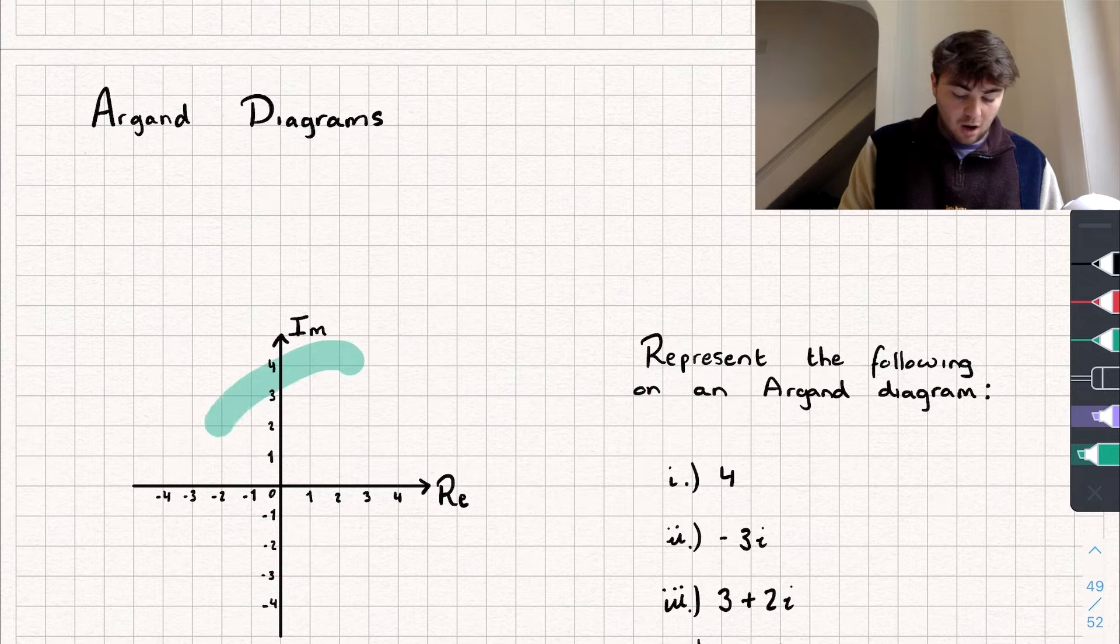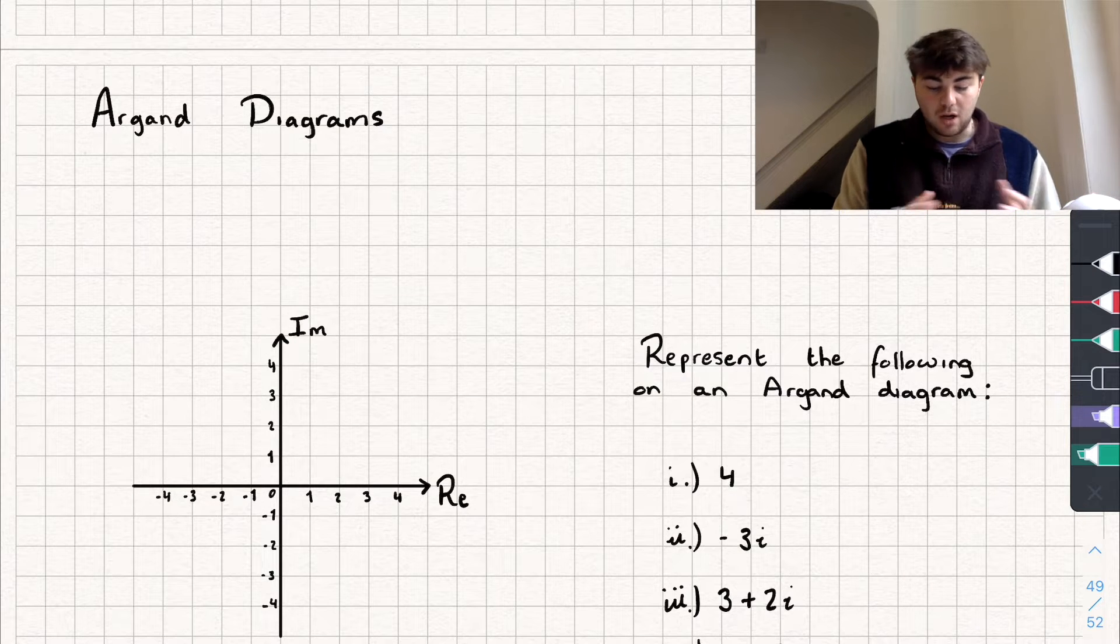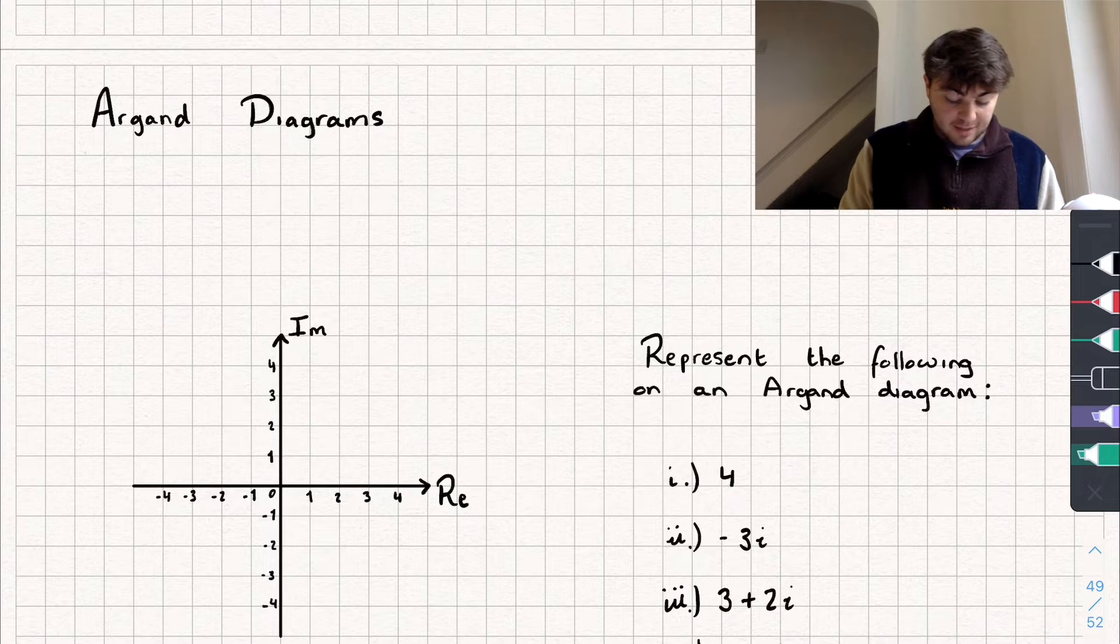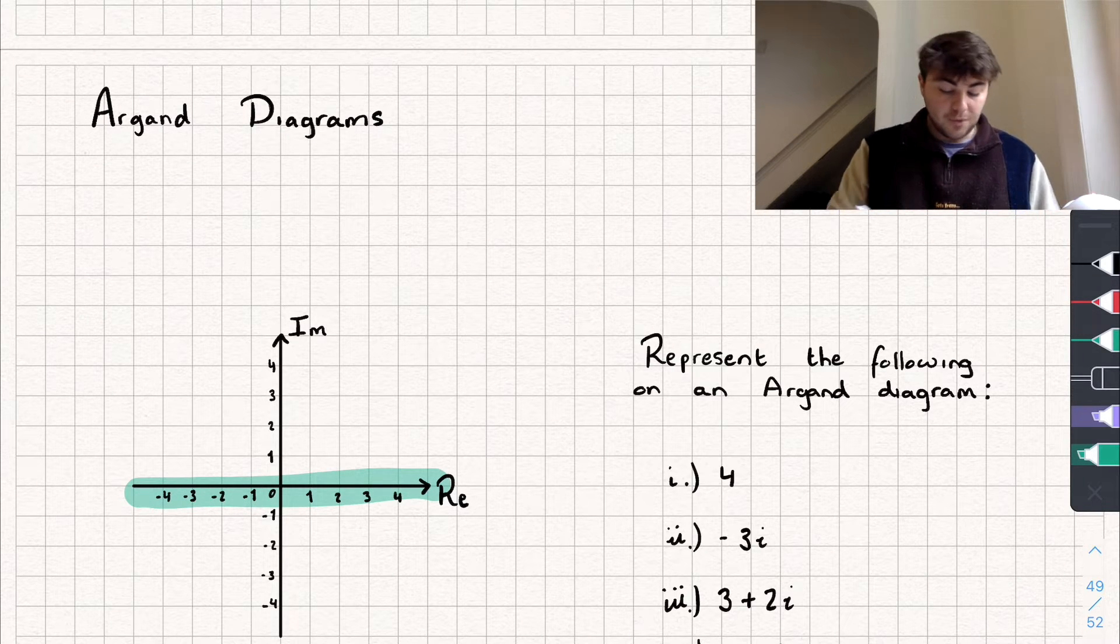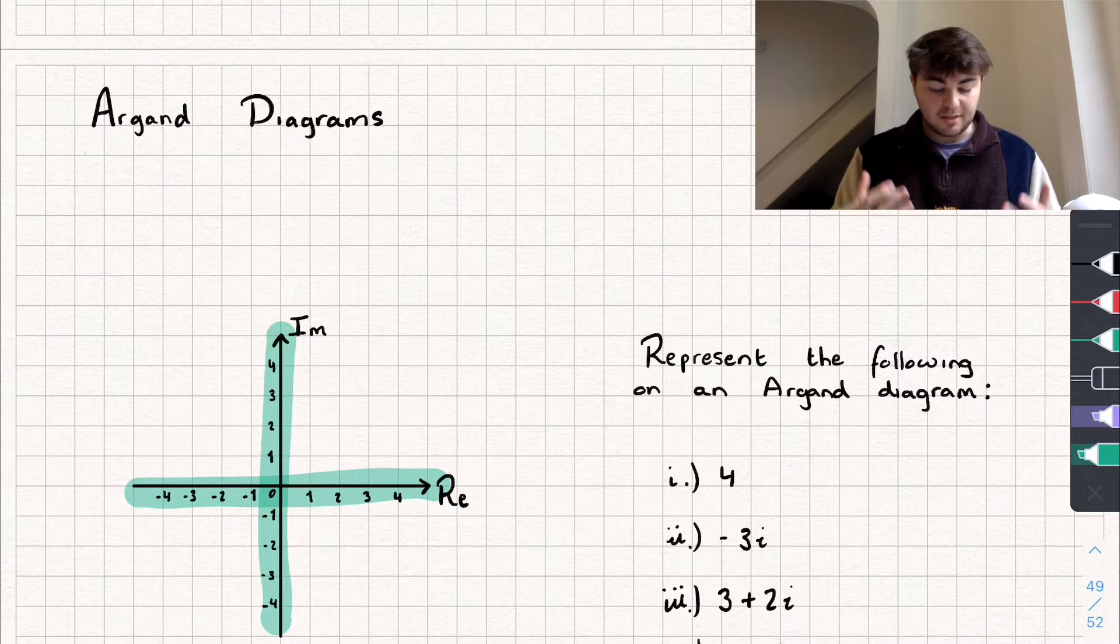So this is what our Argand Diagram looks like. Sometimes it's called the complex plane, and you can see it looks very similar to a Cartesian plane like xy coordinates, except rather than an x-axis we have a real axis which is representing the real numbers, and rather than a y-axis we have an imaginary axis which is representing imaginary numbers.